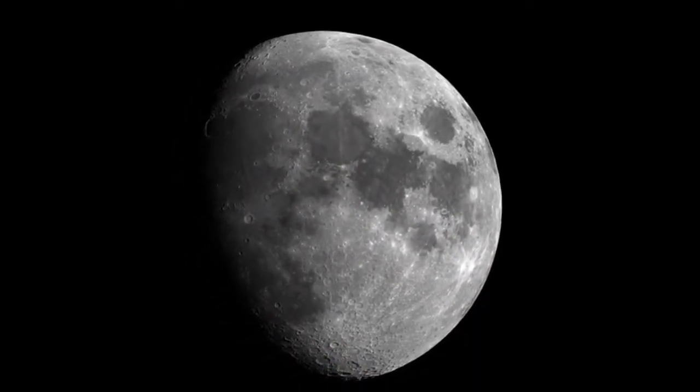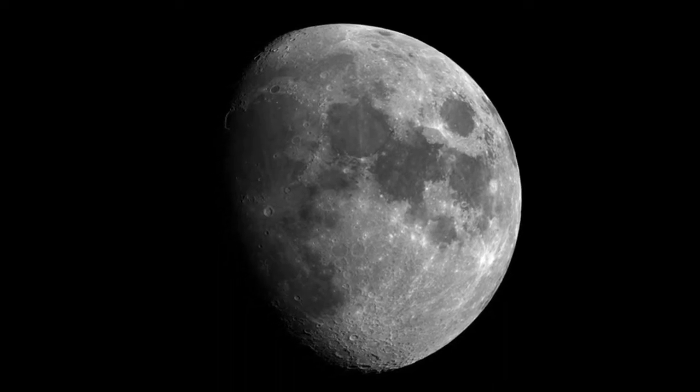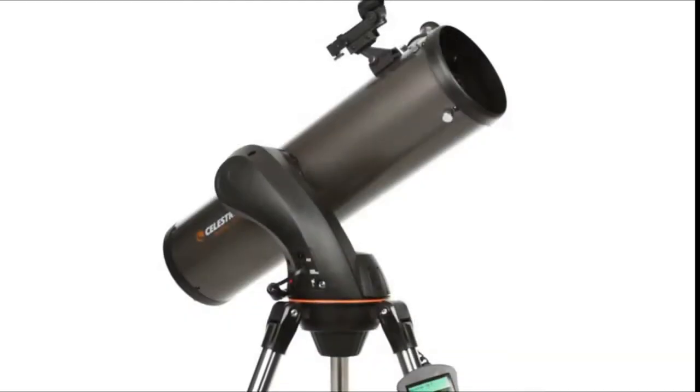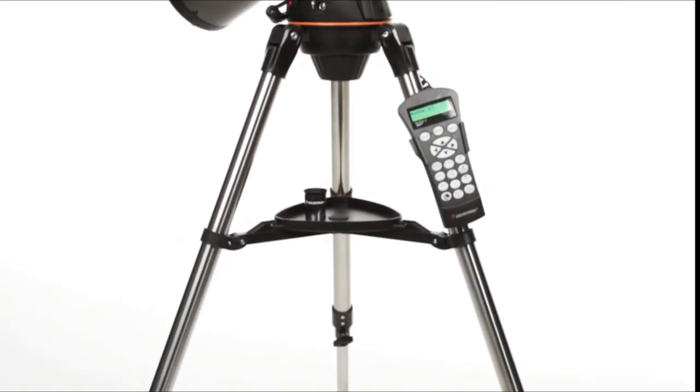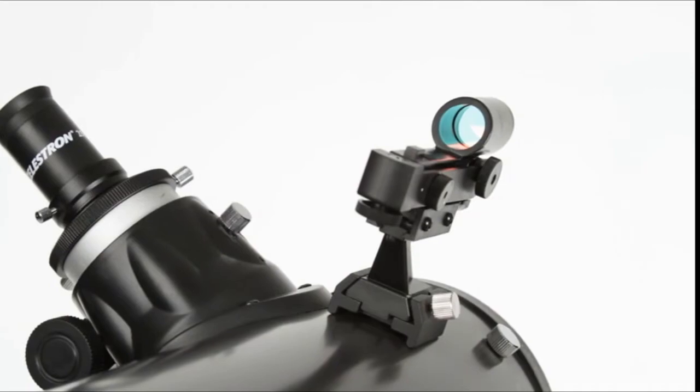All four models provide the bright, sharp images you'd expect from Celestron, the world's number one telescope maker. Your Nexstar SLT includes everything you need to get started with amateur astronomy, including a tripod, a finder scope, and two eyepieces.